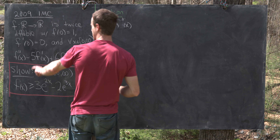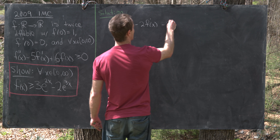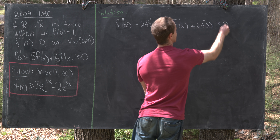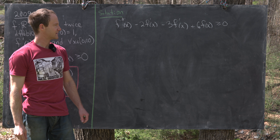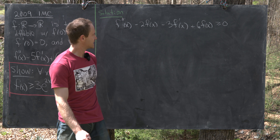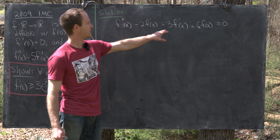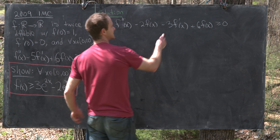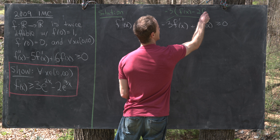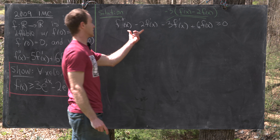We take f''(x) − 5f'(x) + 6f(x) ≥ 0 and split the middle term: f''(x) − 2f'(x) − 3f'(x) + 6f(x) ≥ 0. This splitting is motivated by the fact that 2 + 3 = 5 and 2 × 3 = 6. We can factor −3 out of the last two terms to get f''(x) − 2f'(x) − 3(f'(x) − 2f(x)) ≥ 0, and the quantity f'(x) − 2f(x) looks like it appears as a derivative.